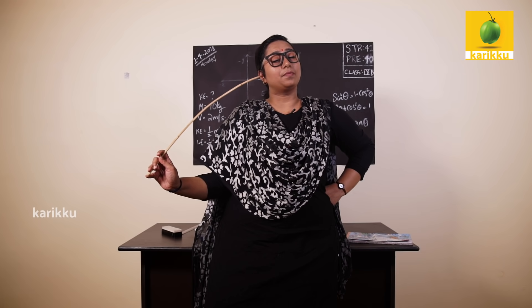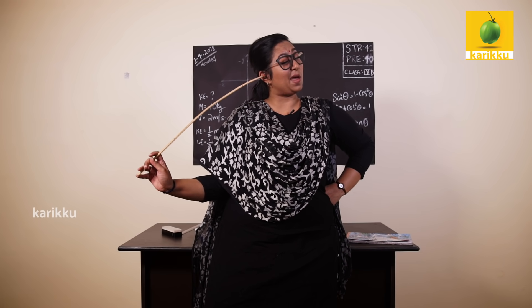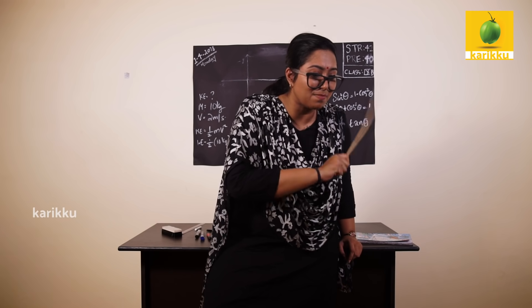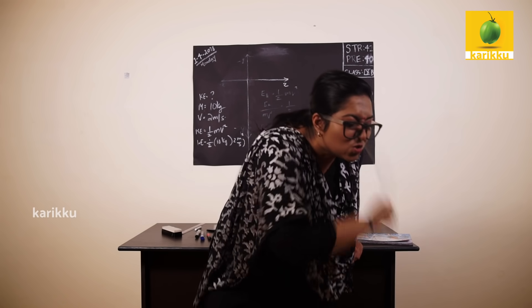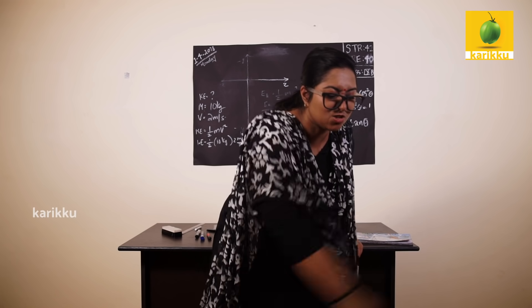Parada. A plus B the whole square. A square plus B square plus 2AB.